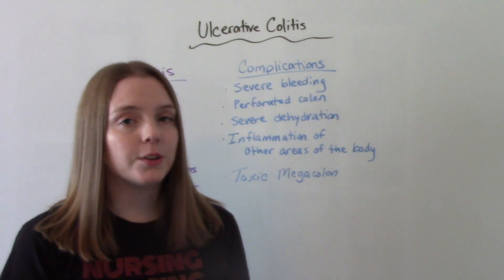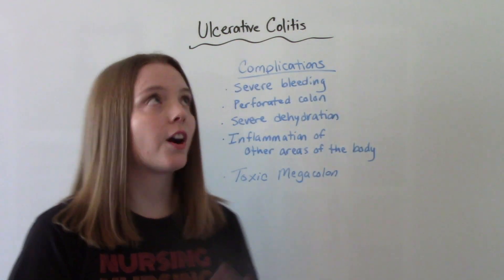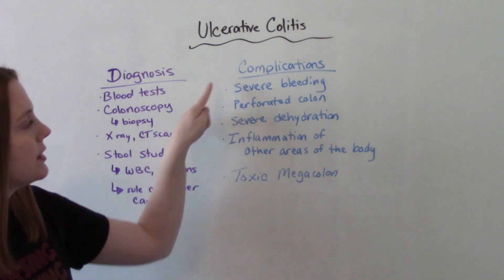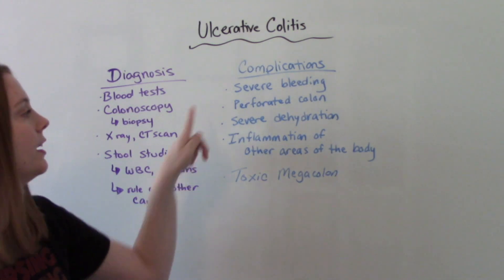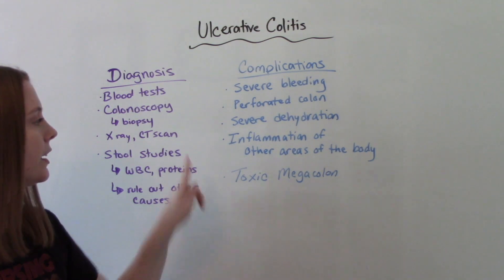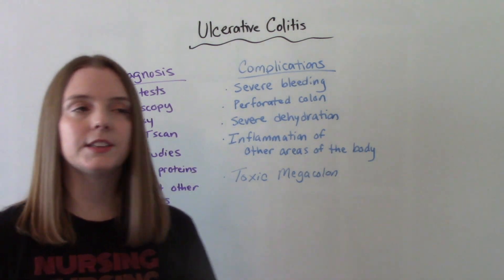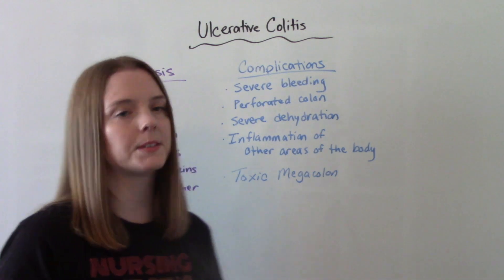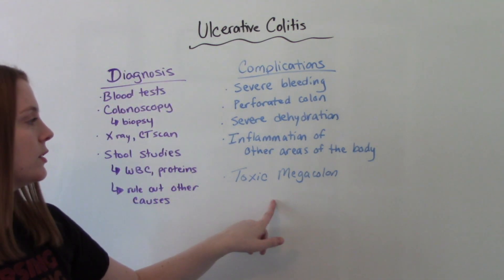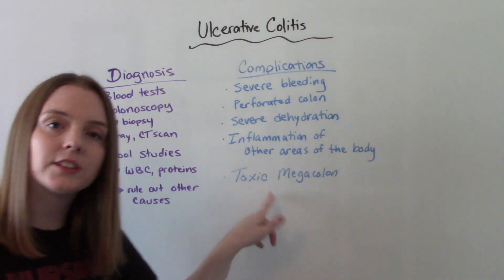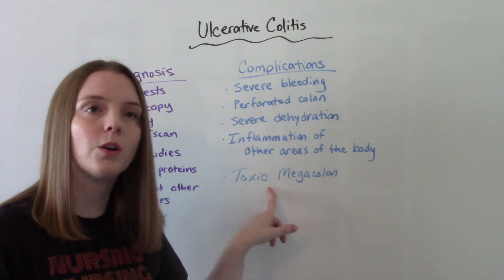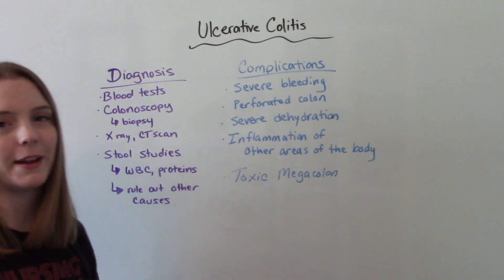There are some important complications of ulcerative colitis. These can include severe bleeding, a perforated colon, severe dehydration, inflammation in other areas of the body like the skin and joints, and toxic megacolon — which is when the colon is so damaged that it starts to dilate, and this can be life-threatening.